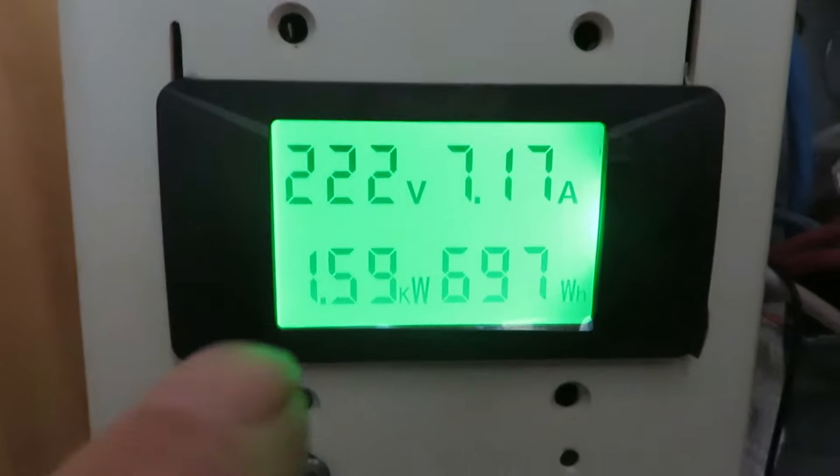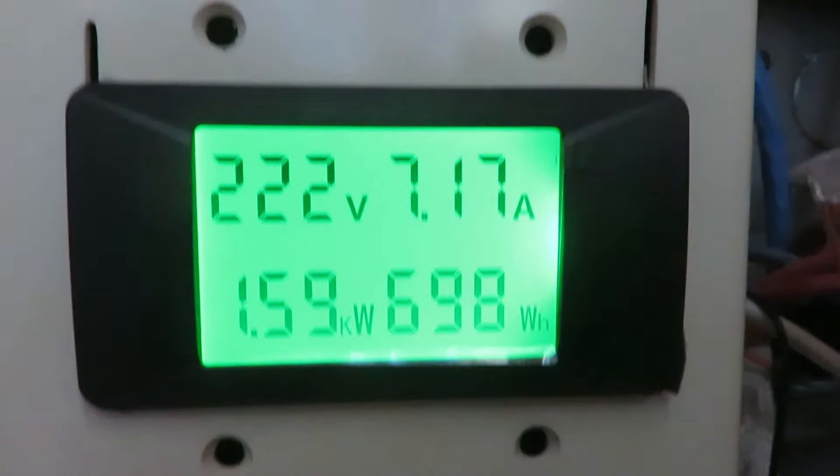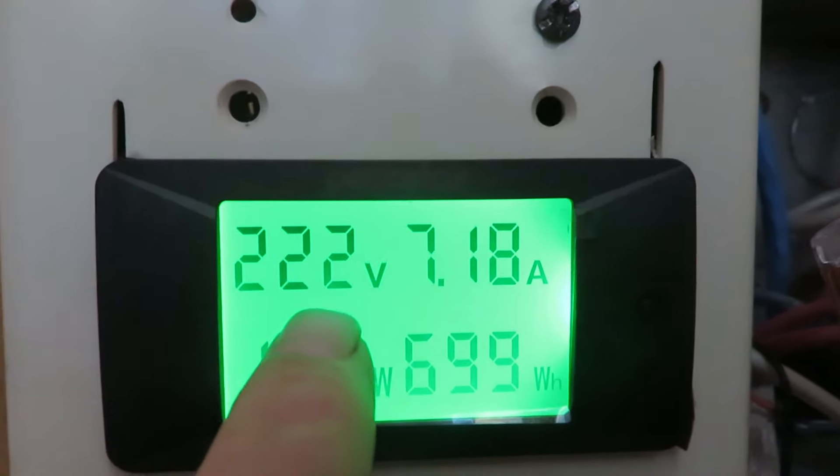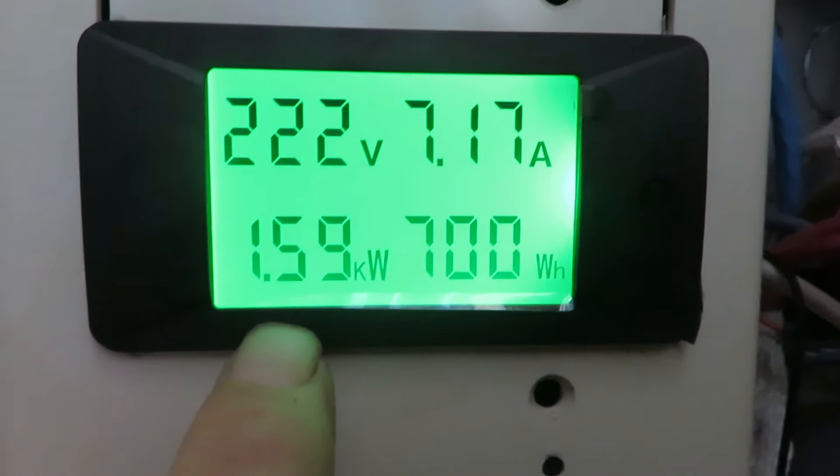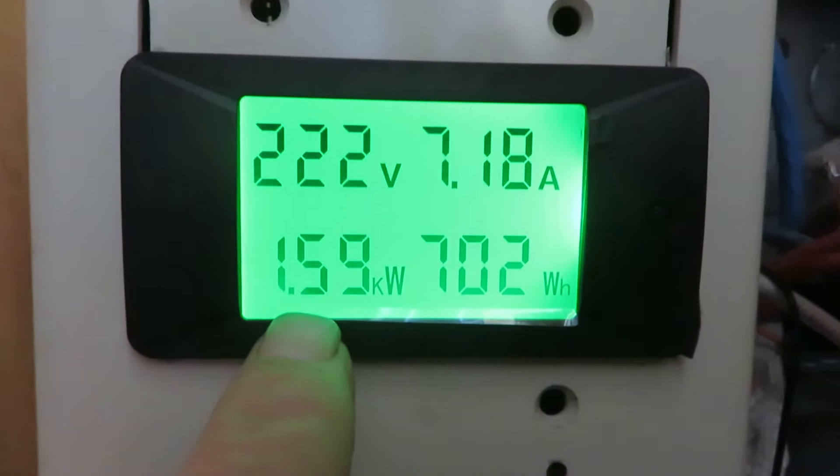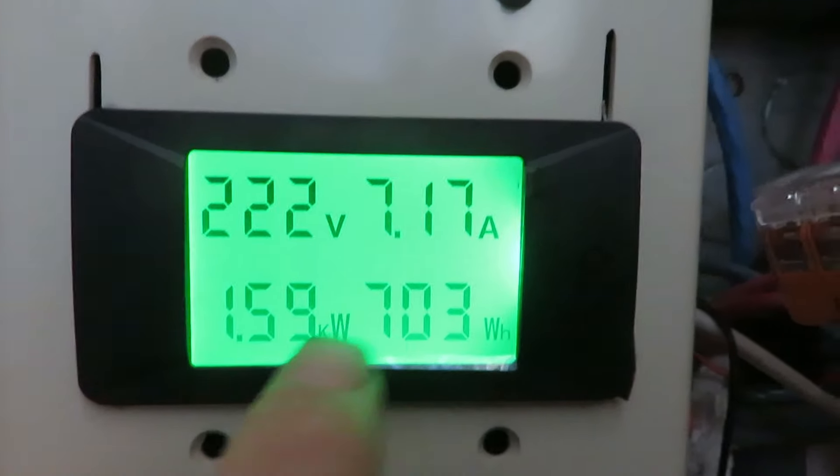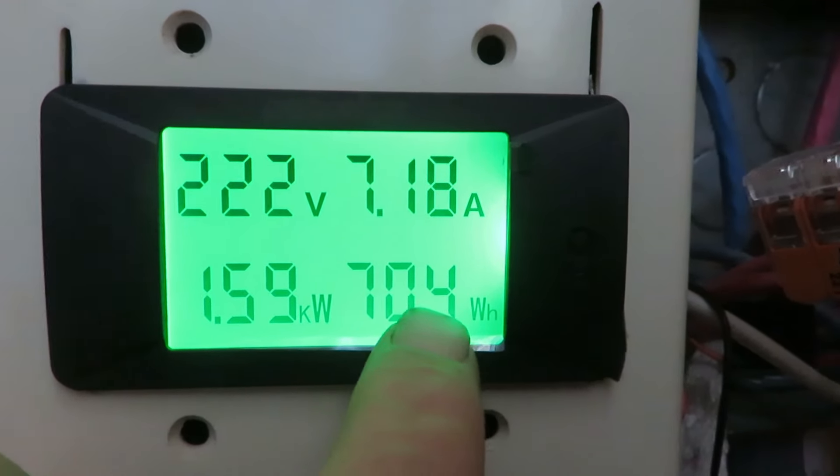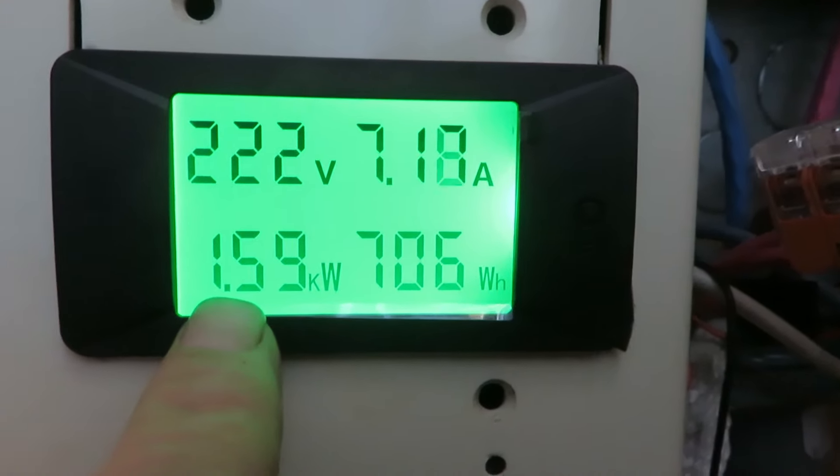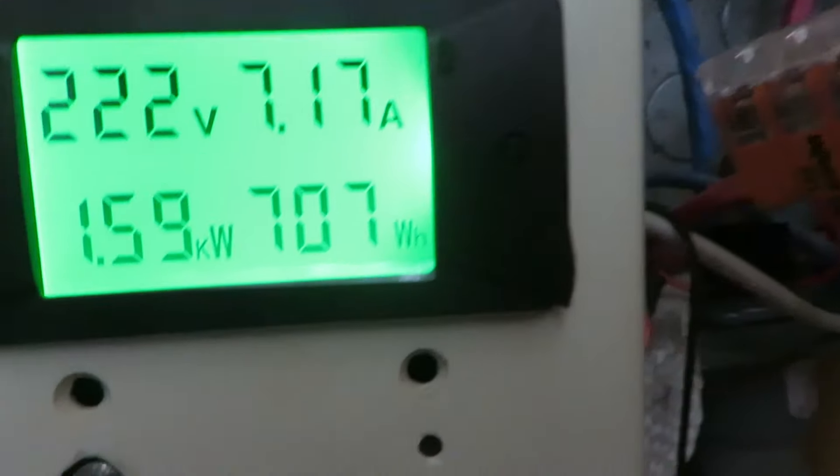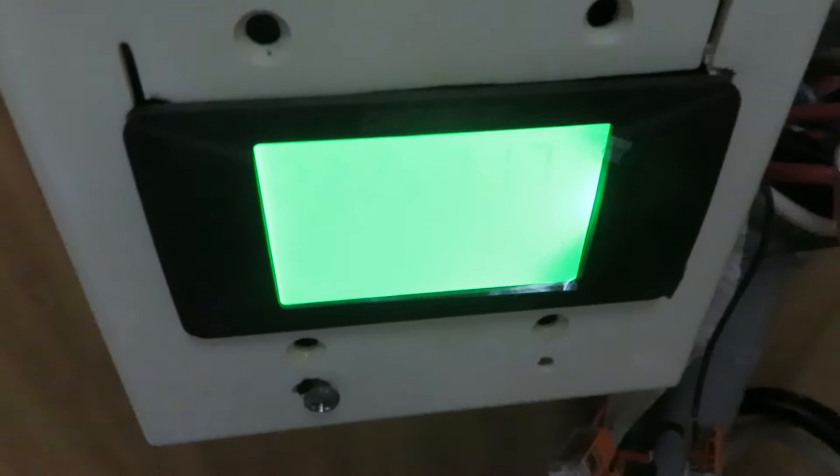This is the direct PV coming in going to resistance heater. 222 volts, 7 amps, 1.6 kilowatts, 1600 watts roughly. This kilowatt hours adding up, so around 1600 watts. And it goes to this baseboard heater here, 2000 watt 240 volt heater, just standard baseboard heater. And I'll show how it's wired up.